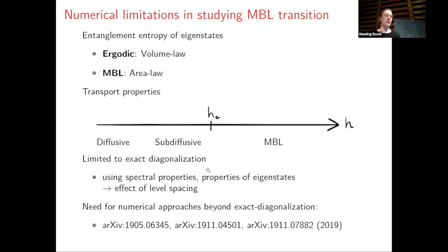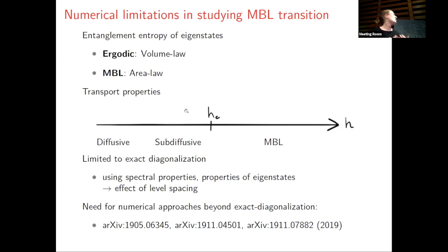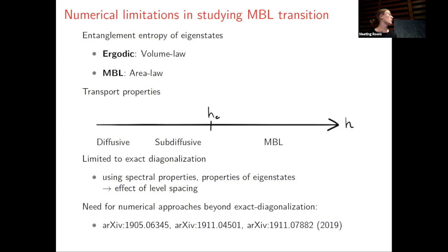Most studies have focused on using exact diagonalization and looking at spectral properties and properties of eigenstates. But what we've learned in the last year is that this has severe limitations as well, because essentially before hitting the transition one actually hits the level spacing. It's again very difficult to conclude anything from there. So people have started asking whether we can actually examine this transition numerically.